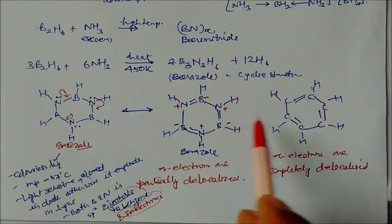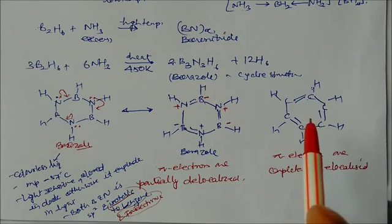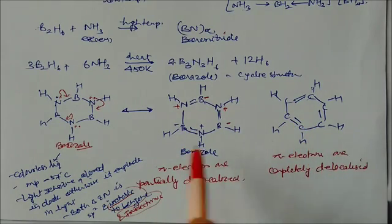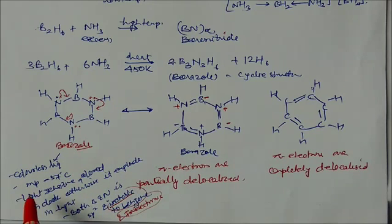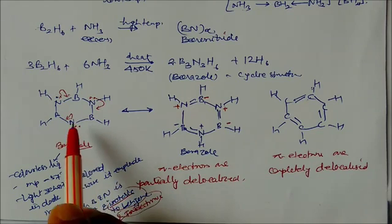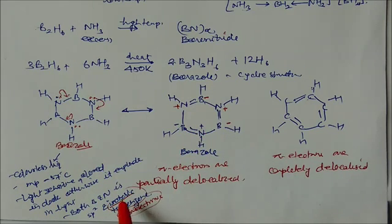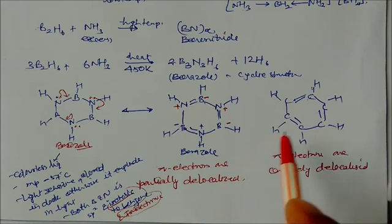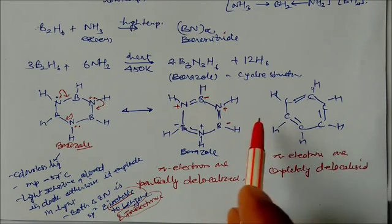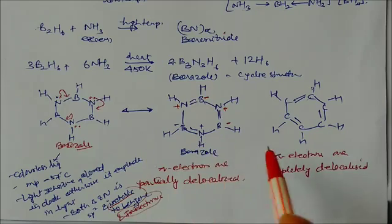Other specialties of borazole: It is a colorless liquid with melting point minus 57 degrees Celsius, very low temperature. It is light sensitive, so it is stored in dark rooms, otherwise in light it can explode or burst. Both boron and nitrogen are sp2 hybridized. It is isoelectronic and isostructural to benzene. That's all.